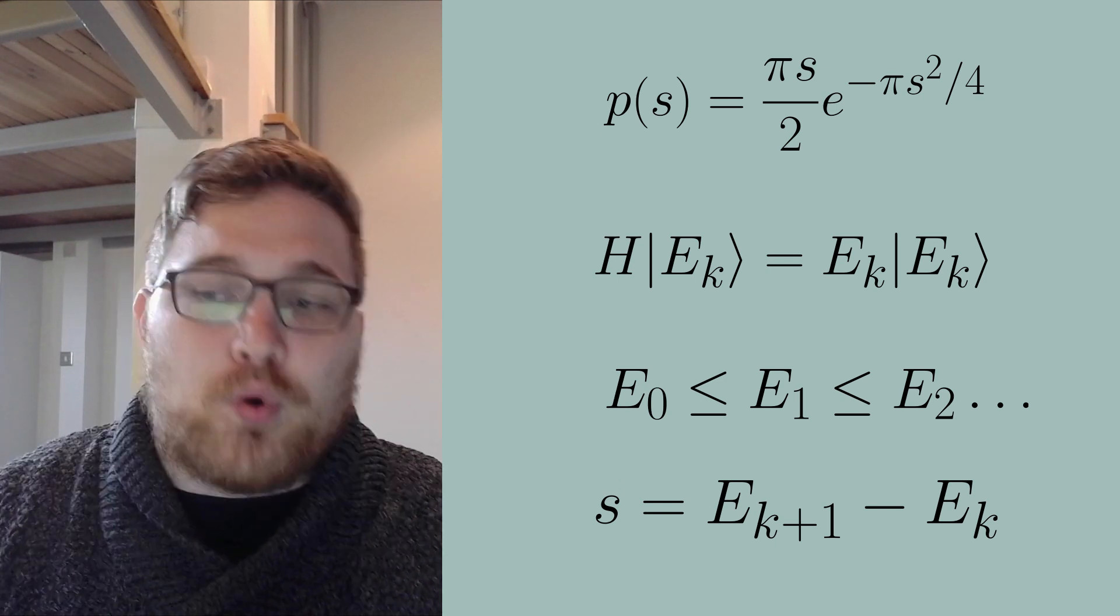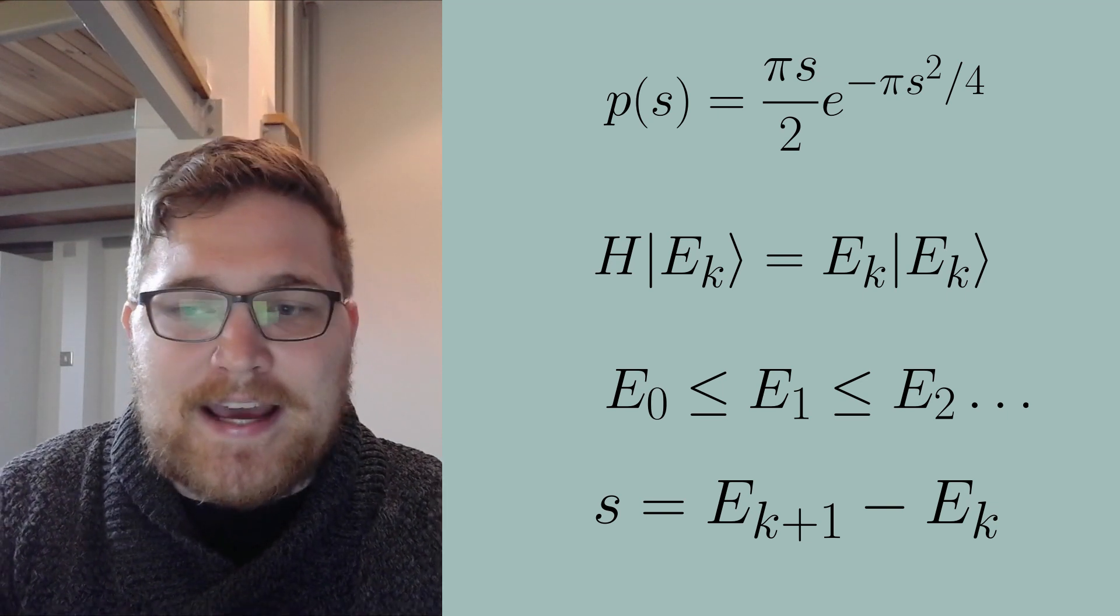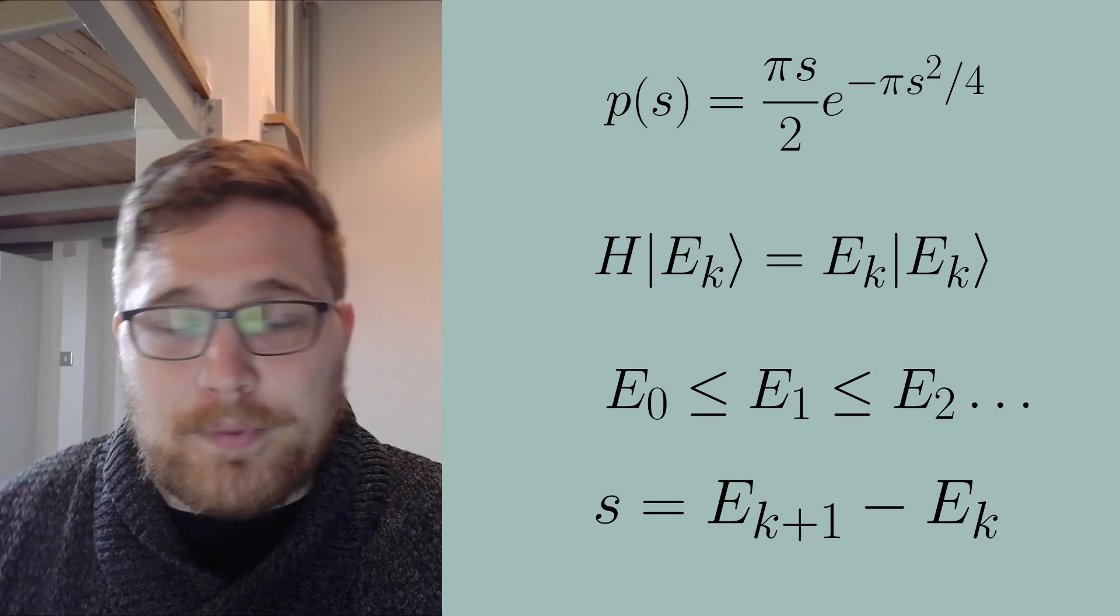So what this tells us is that our energies have what's called level repulsion. And importantly, or equivalently, chaotic Hamiltonians will have a degeneracy in the energy spectrum with probability zero.